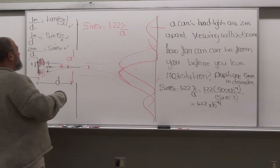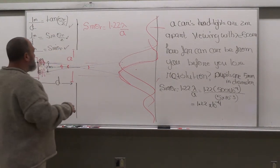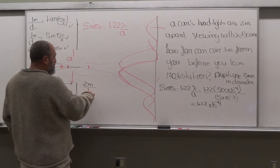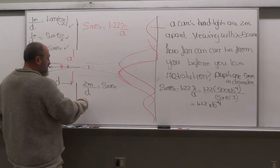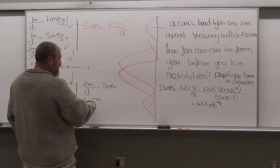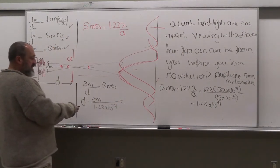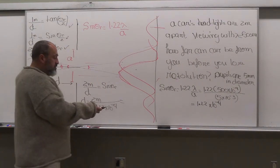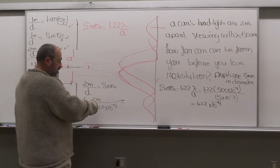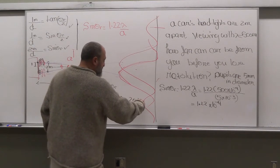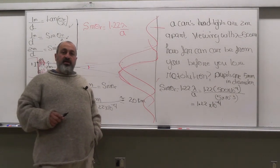Using the loose approximation: two meters over D equals sin theta_r, so D equals two meters over sin theta_r, which is 1.22 times 10 to the power minus 4. That's going to be approximately 20,000 meters — approximately 20 kilometers. So the car can be 20 kilometers away from you before you lose resolution.